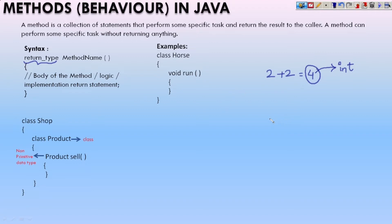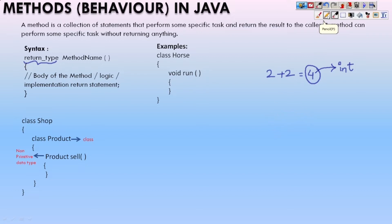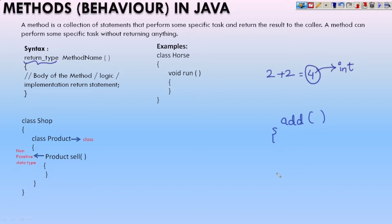For example, if I am going to write a method here to add two numbers called 'add' — this is how you are going to write a method: the name of the method and the parenthesis. After this, inside here you have to write the logic of the method — the body of the method, or logic, or implementation.